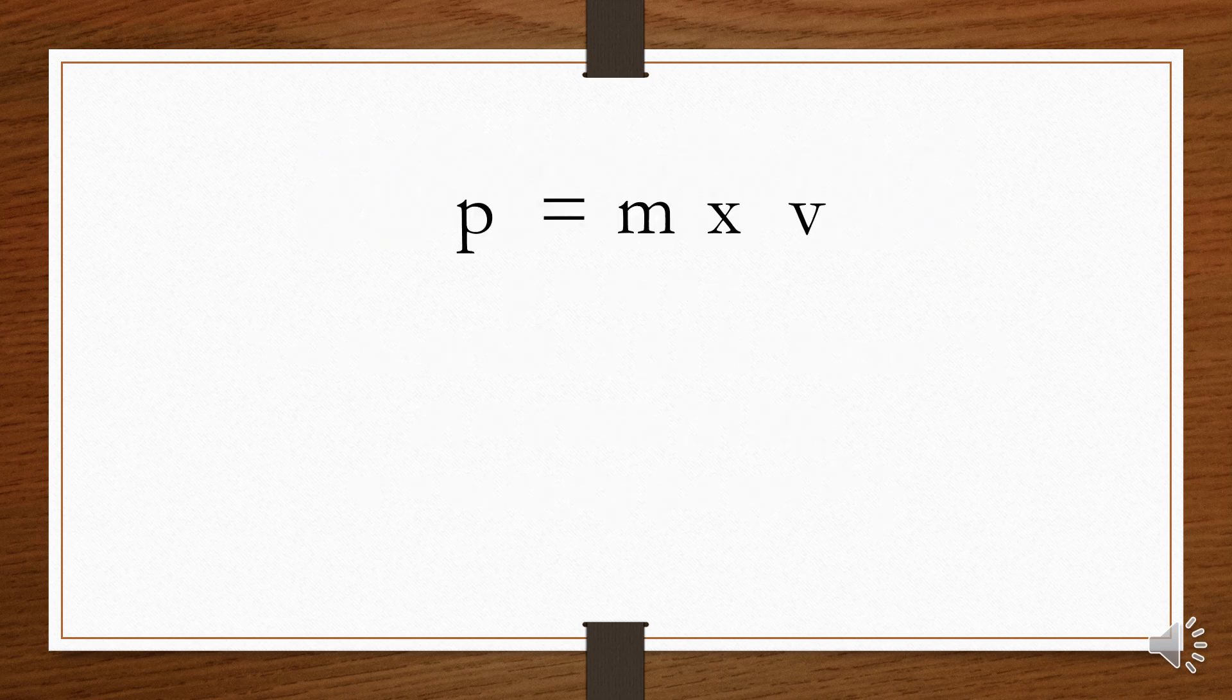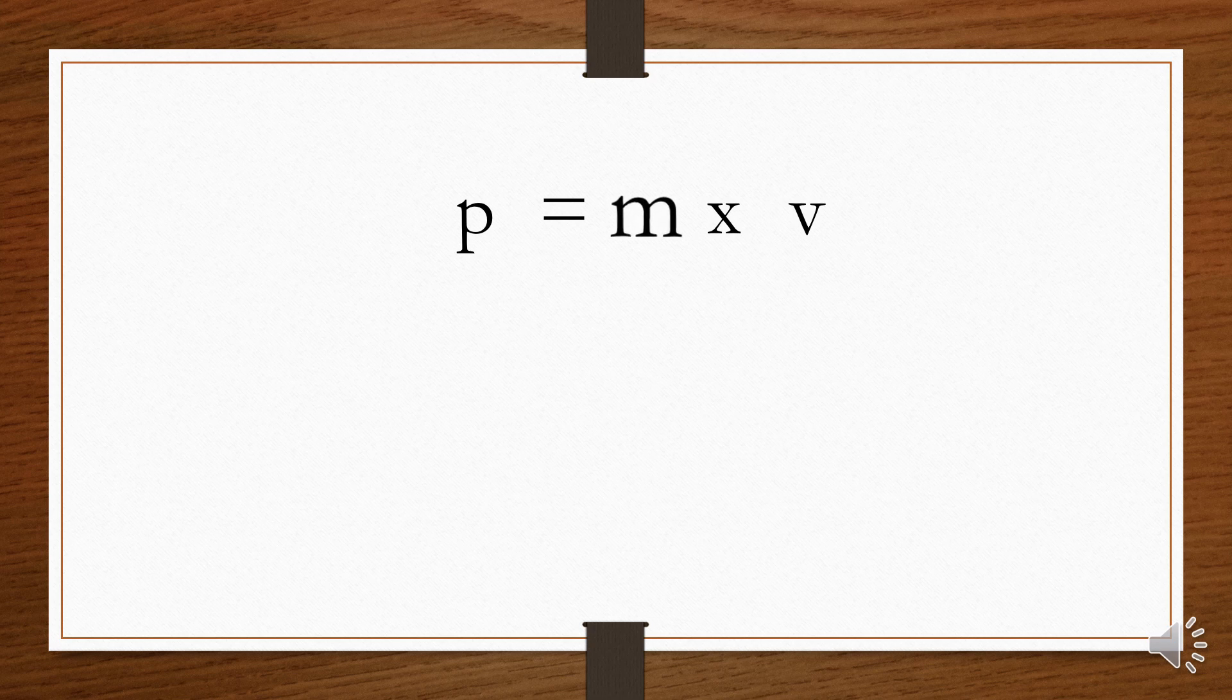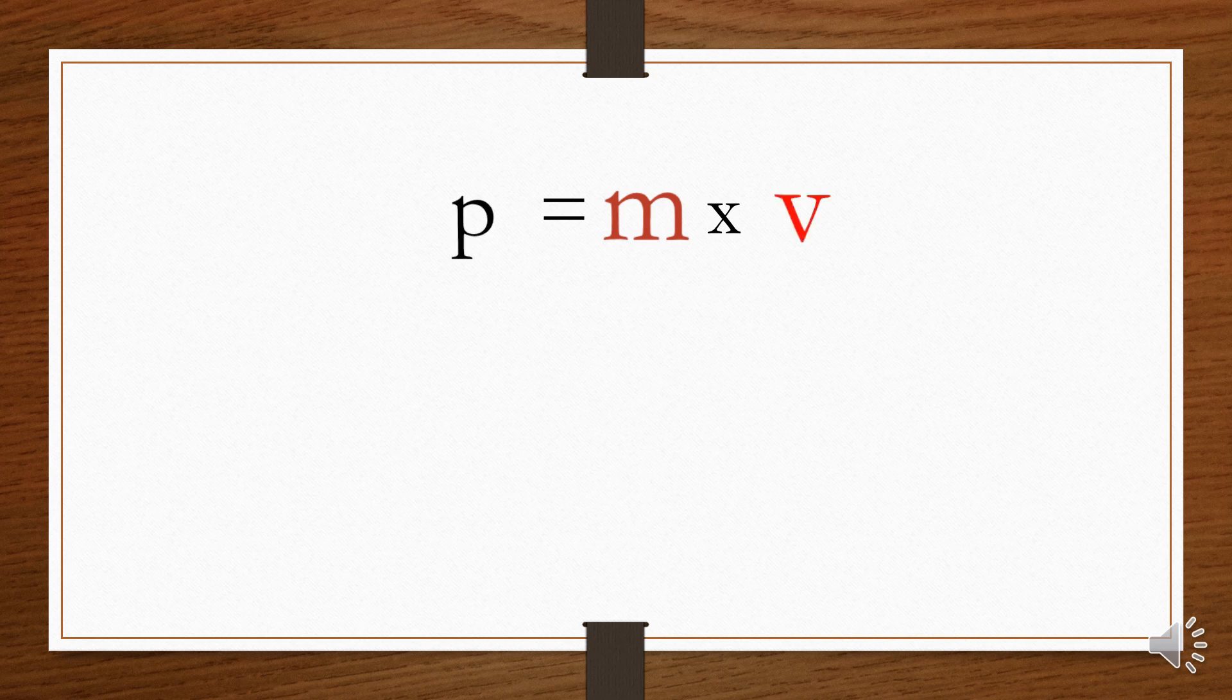As you can see, if you increase one of the variables on the right side of the equation, either mass or velocity, the momentum on the left side must also go up in order to keep both sides equal. If you increase both mass and velocity, the momentum goes up even more.